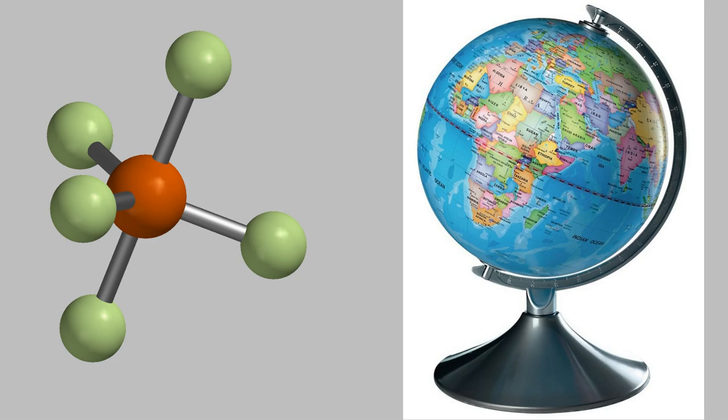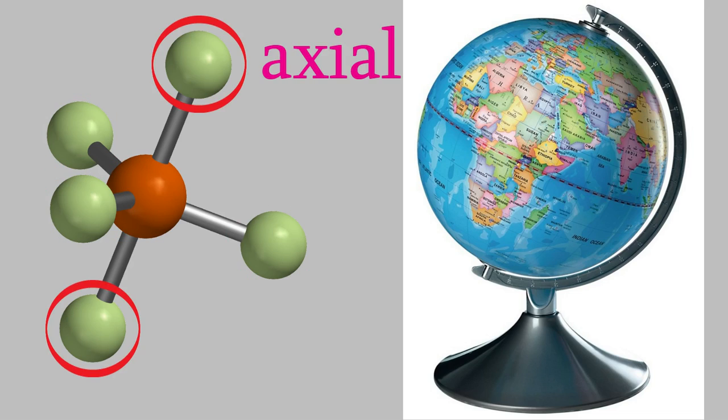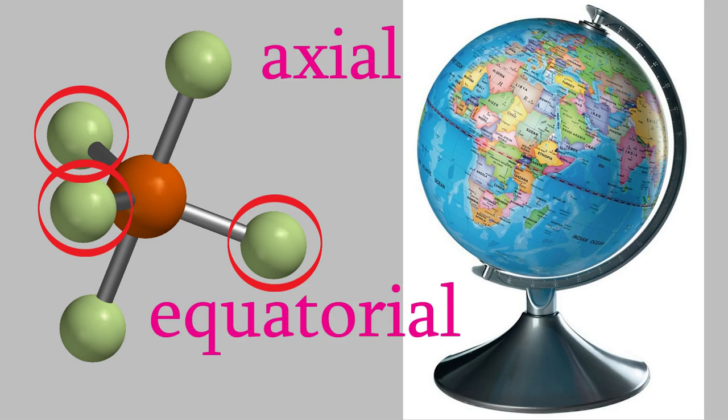This kind of resembles a globe of the Earth. The two bonds opposite each other are like the north and south poles of the Earth's axis, and the three around the middle point along the Earth's equator. For that reason, these two bonds are called the axial bonds, and these are called equatorial bonds.